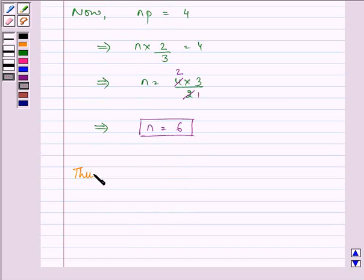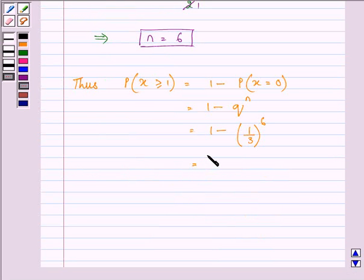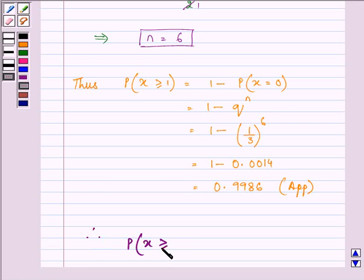Thus we can write down that probability when x is greater than or equal to 1 is equal to 1 minus probability that x is equal to 0, which is 1 minus q raised to the power n. Now we know the value of q as well as n. So we have the value of q as 1 by 3, the value of n as 6. So this further implies 1 minus, the value of 1 by 3 raised to the power 6 comes out to be approximately 0.0014. So we have it like 0.9986 approximately. So probability of x is greater than or equal to 1 is 0.9986 approximately.